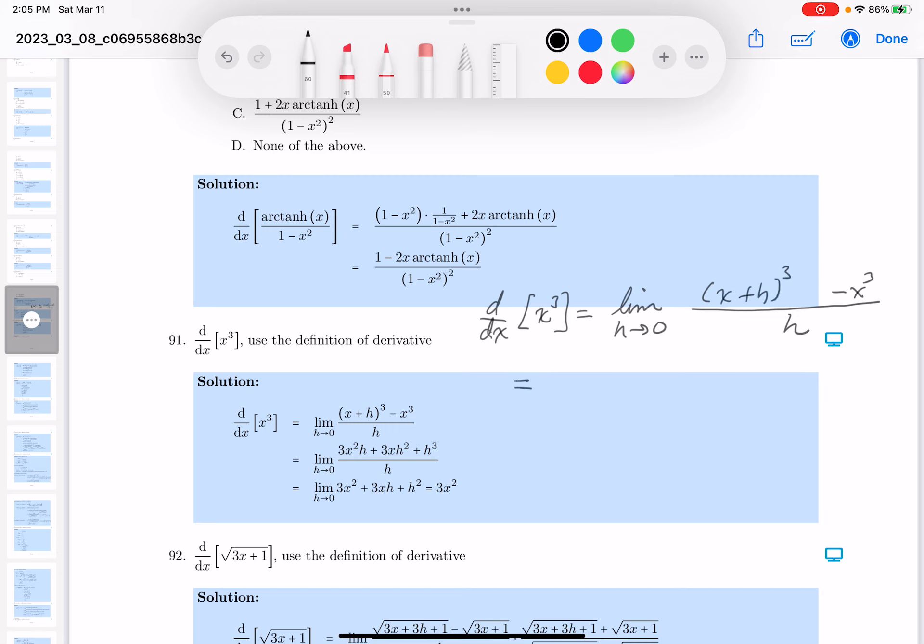Next thing I would do is continue. Limit as h goes to zero. By binomial theorem, this is going to be x cubed plus 3x squared h plus 3xh squared plus h cubed minus x cubed.